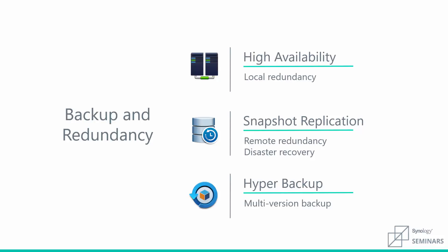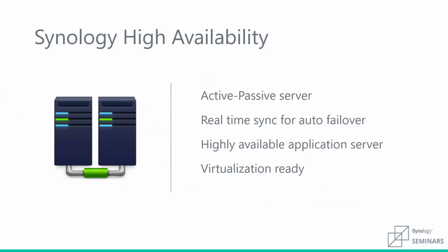For local redundancy you'll be using high availability. Snapshot replication is for disaster recovery and providing remote redundancy, and Hyper Backup is our multi-version backup tool that's highly configurable and something that most of you will probably be pretty familiar with. We'll start out with high availability.